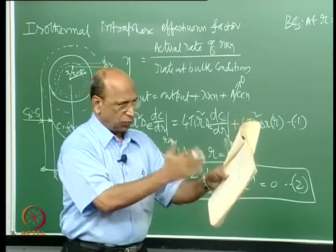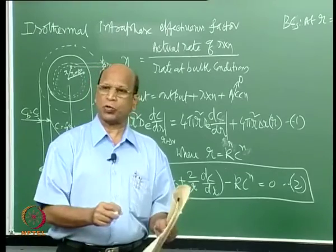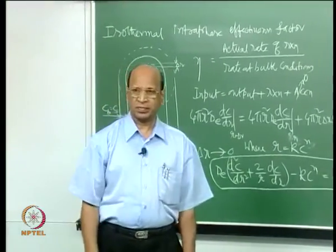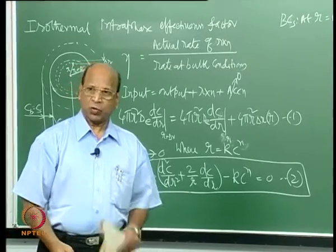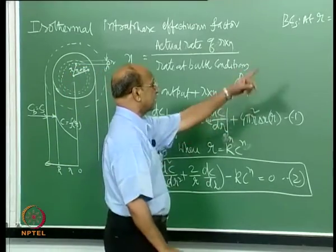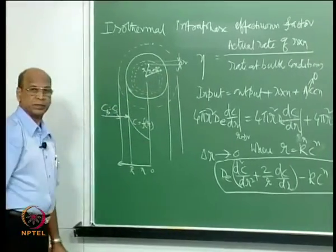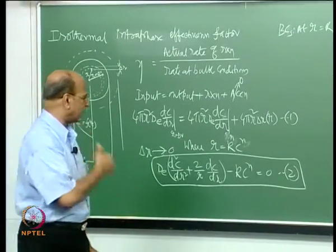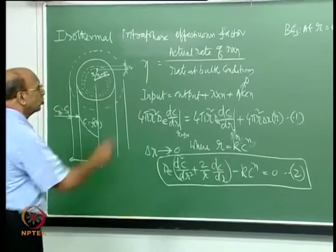In a distributed parameter system like a tubular reactor with no mixing, at every point along the length there is a change in temperature and concentration. For that, we take a small element and write what is happening inside it, ending up with a differential equation. Boundary conditions cover both the surface and the center of the particle.